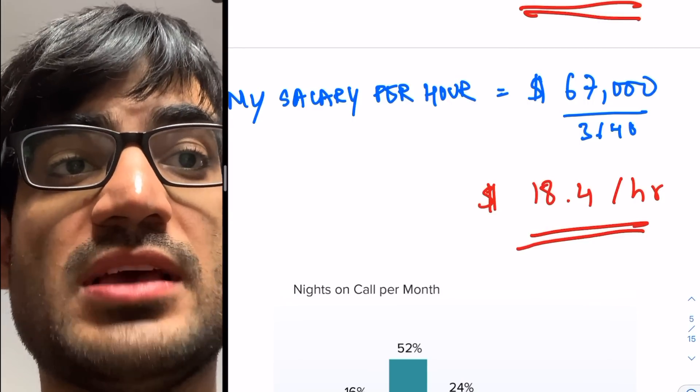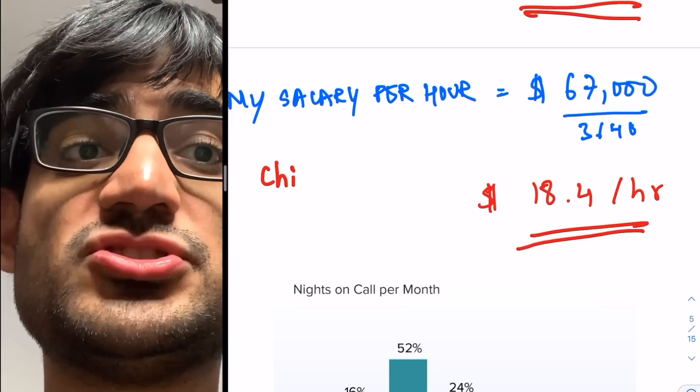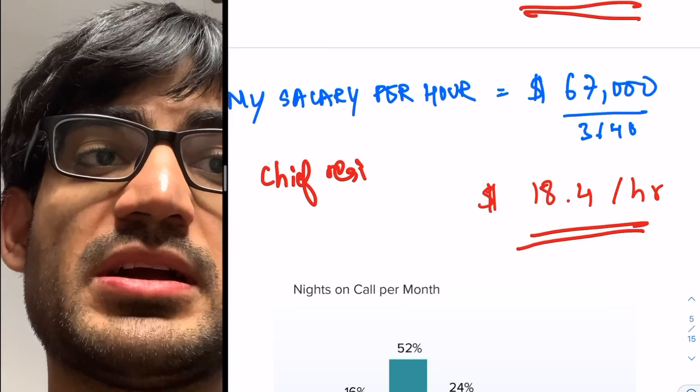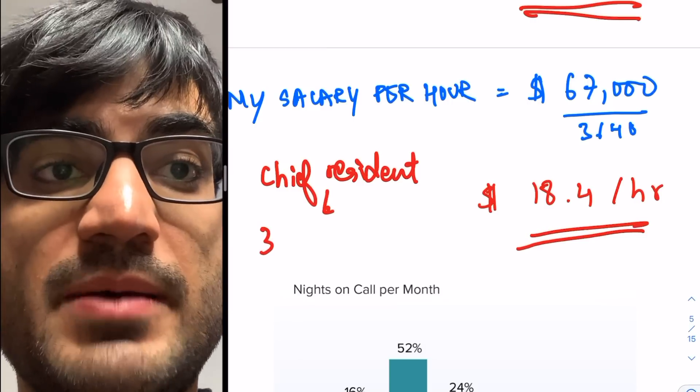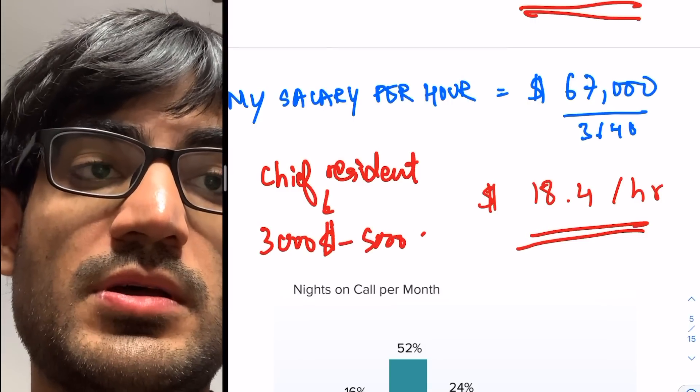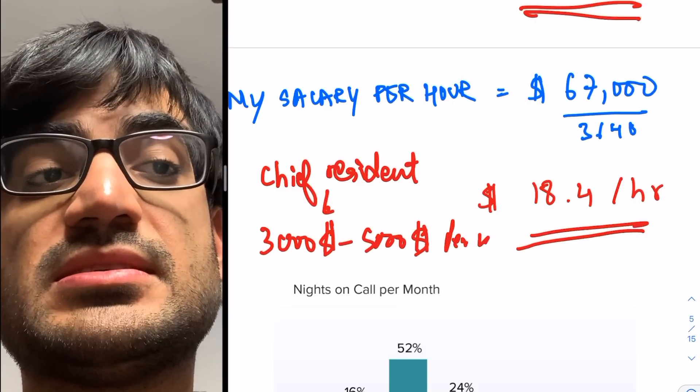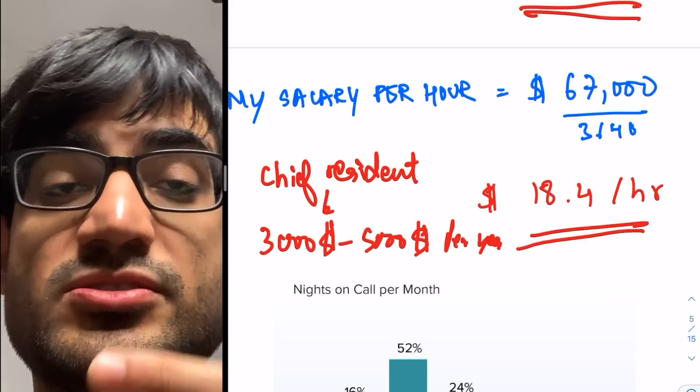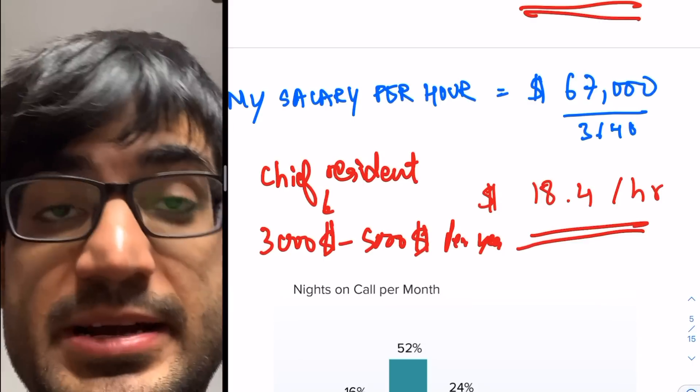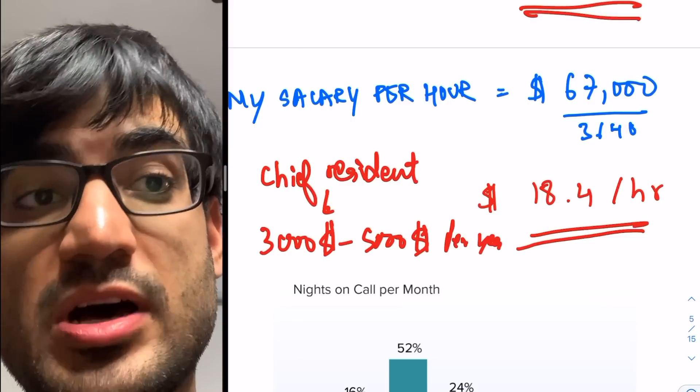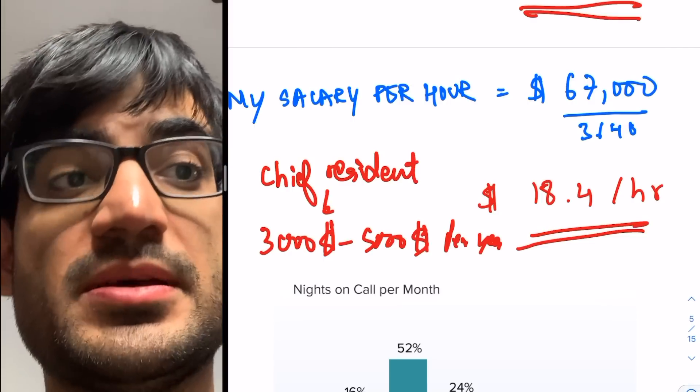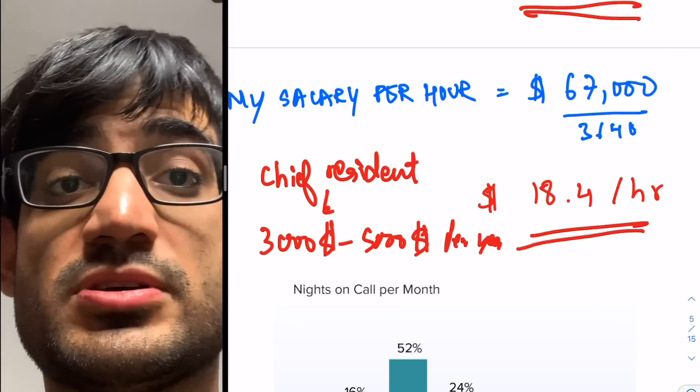And if you become the chief resident, you'll be making about $3,000 to $5,000 extra per year. What a chief resident means is you take part in the administrative work of the program. And because of that, you are paid a bit extra. So that is something else to consider.